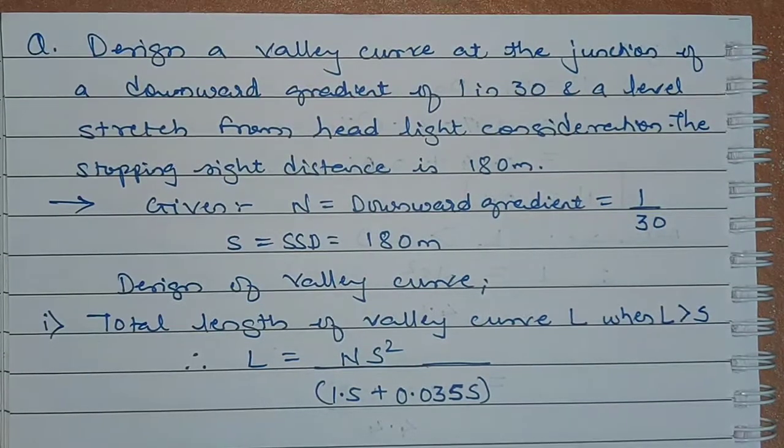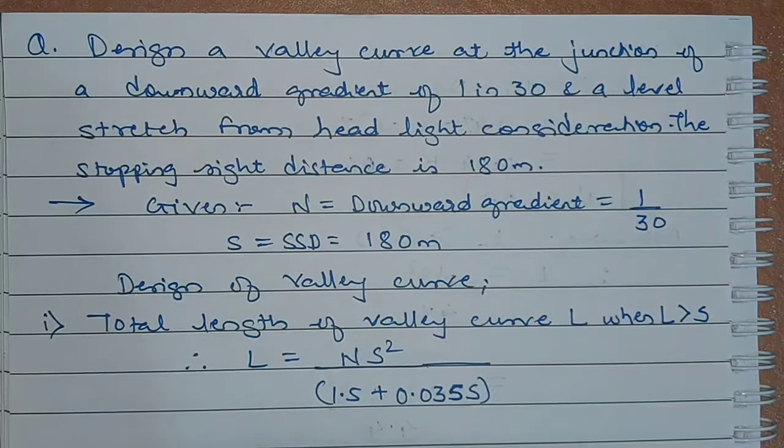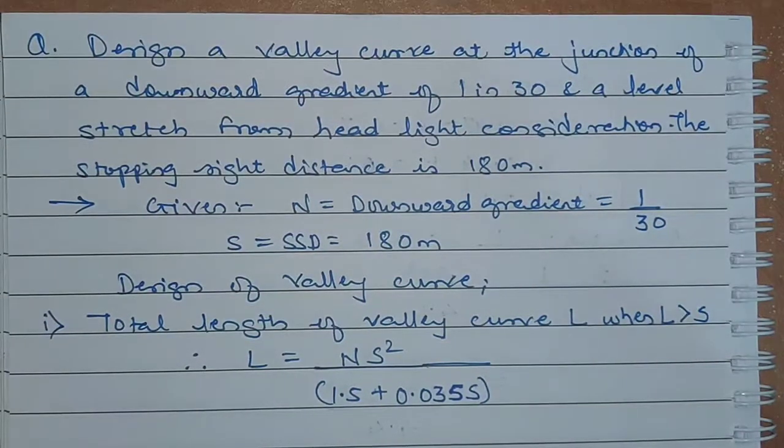So the given data to us is the downward gradient of 1 in 30, that is the slope, and a stopping sight distance of 180 meters. We have to design the valley curve.